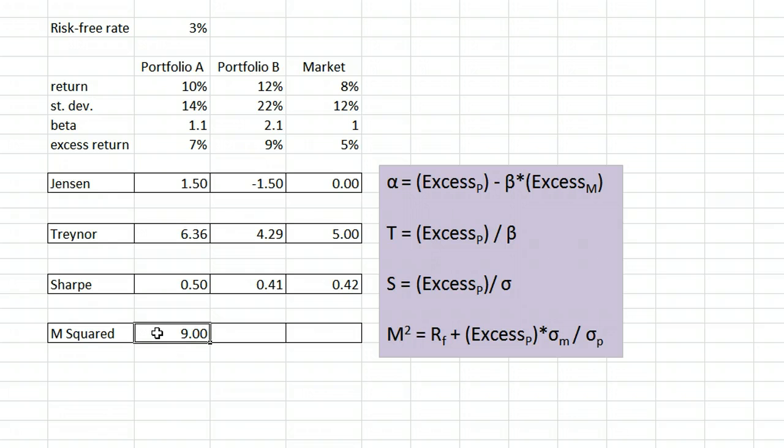What this tells us is that if our portfolio were adjusted to have the same risk as the market, it would have returned 9%. This is good because the market actually returned just 8%. Putting it another way, we expect portfolio A to have an advantage in terms of return simply because it took on more risk. If we adjust for that advantage, portfolio A still would have outperformed the market with a 9% return compared to the 8% return.